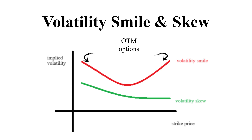In contrast, out-of-money options have higher implied volatility than at-the-money options. They are more useful to the investor because they allow investors to take a directional bet on the underlying asset's price movement.